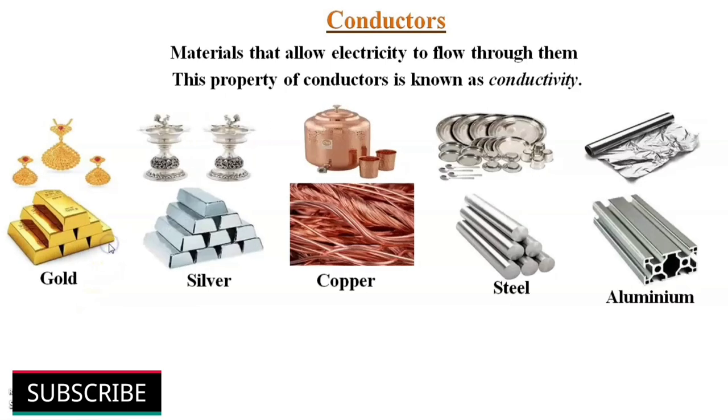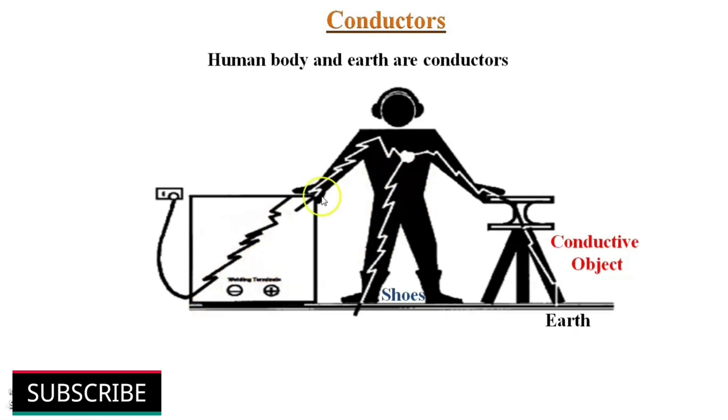Some of the examples of common conductors include materials such as gold, silver, copper, steel, aluminum and etc. Matter, human body and earth are good conductors. This is the reason why we get electric shocks. The electric current flows through our body towards the earth.